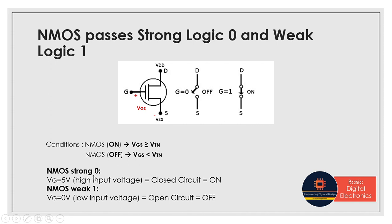If VGS is less than VTN, NMOS will be turned off. NMOS passes strong logic 0 whenever there is a high input voltage — it creates a closed circuit and turns on. Whereas NMOS passes weak logic 1 when a low input voltage is applied — it creates an open circuit and turns off. Let's analyze these conditions for NMOS with certain examples.